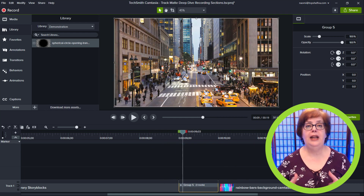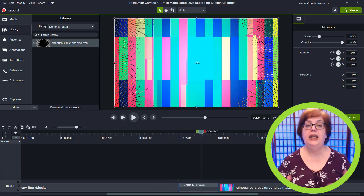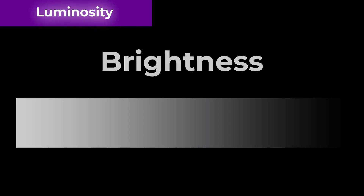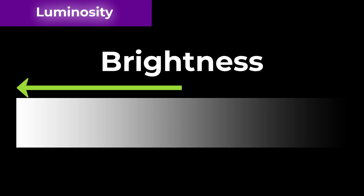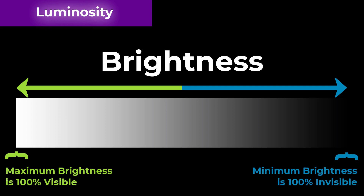Let's move on to luminosity trackmats. Luminosity refers to the media's brightness, trending towards white or trending towards black, and determines the level of pixel visibility and transparency between tracks. With luminosity, the maximum brightness, which is white, is 100% visible, and the minimum brightness, which is black, is 100% invisible.